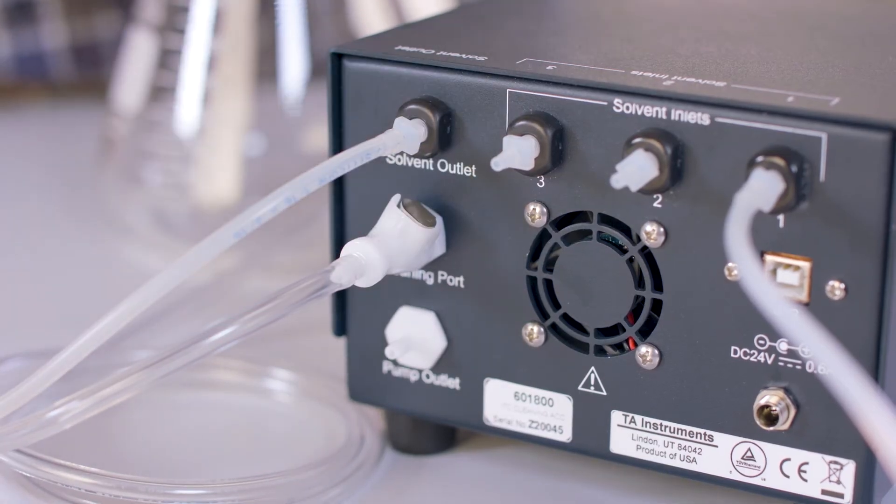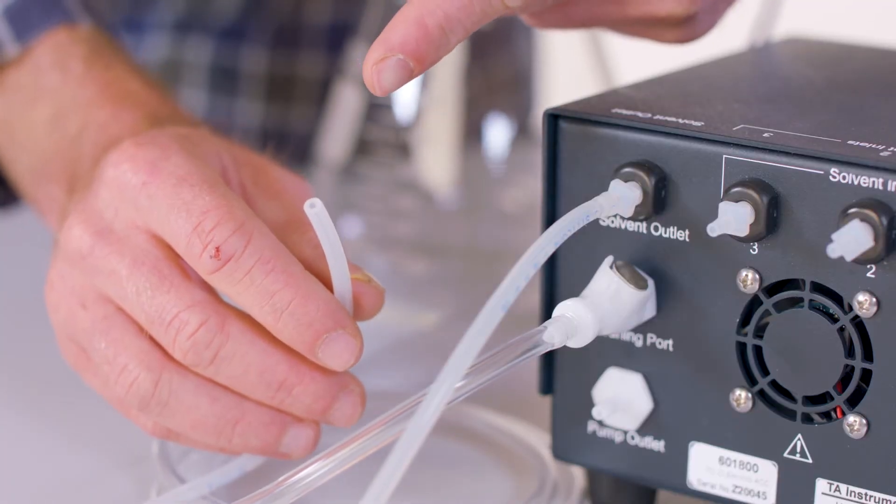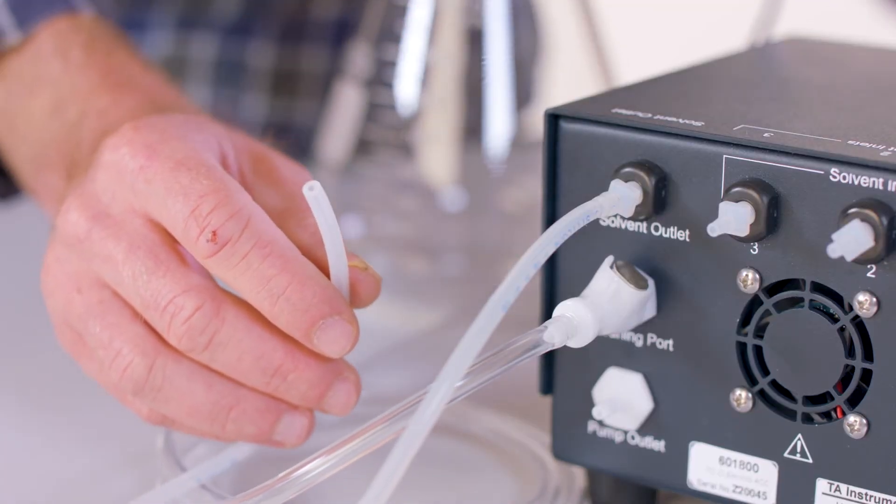An additional tube is then connected to the solvent outlet. At this point, the tubing can be connected from the solvent outlet to the calorimeter.